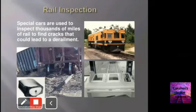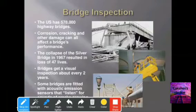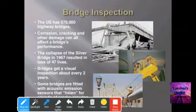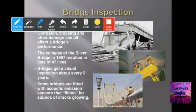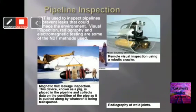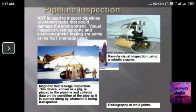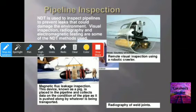NDT is applicable in many places. For bridge inspection, the US has 578,000 highway bridges. Corrosion, cracking, and other damage can affect a bridge's performance — the collapse of the Silver Bridge in 1967 resulted in loss of 47 lives. Bridges receive visual inspection about every two years, and some are fitted with acoustic emission sensors that listen for sounds of cracks growing. NDT is also used to inspect pipelines to prevent leaks that could damage the environment.